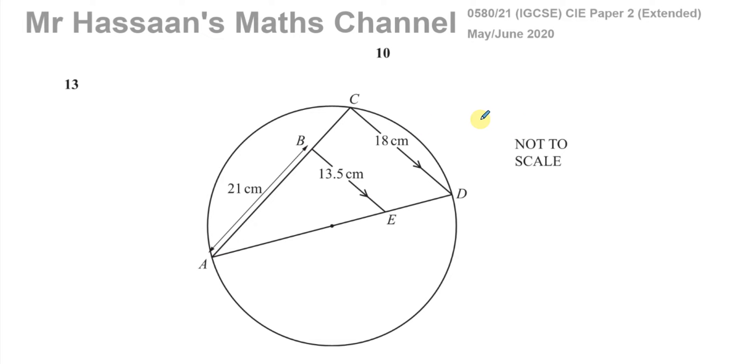And this question here is this shape, we have like a triangle inside a triangle inside a circle, not to scale. We've been given some lengths and it says C lies on a circle with diameter AD, so we know that AD is the diameter of the circle.